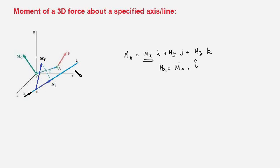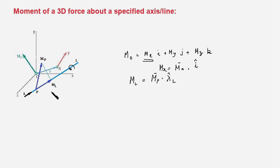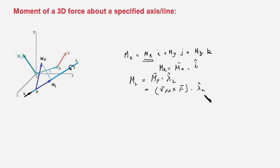This gives an idea about the rotation about line L. Mathematically, Ml equals the vector Mp dotted with lambda, where lambda is a unit vector along L. In turn, Mp equals r_PA cross with the force vector — a vector cross product to compute the moment about point P — and then we dot it with the unit vector along line L to get the moment about axis L.